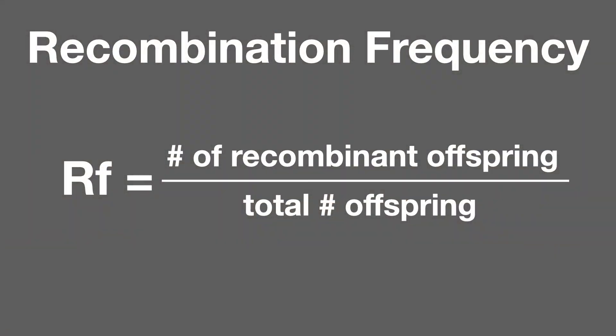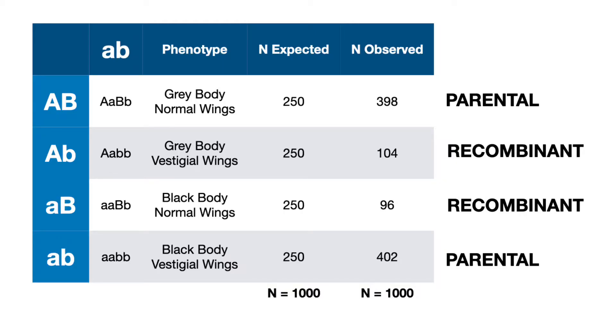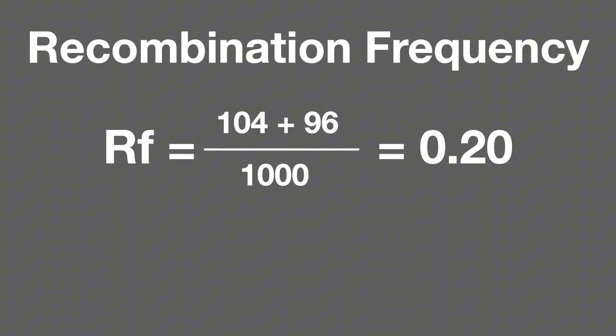From this point onward is where things get really interesting. We can calculate something called the recombination frequency. Recombination frequency is very easy to calculate: count up all the recombinants and divide by the total number of offspring. In this case, we add 104 and 96 to get 200, then divide by 1,000 total offspring, giving us 200/1000 or 0.20.